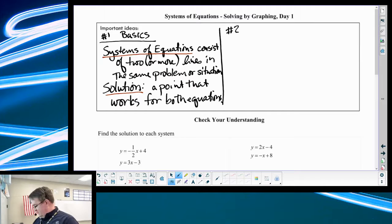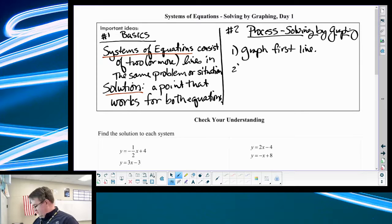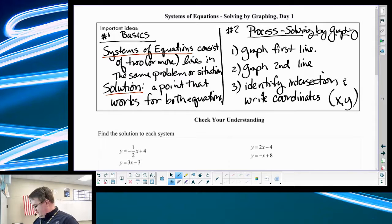Over here, number two, is going to be the process of solving by graphing. So what we're going to do here is first step, these are going to shock you. Think about what we did. What was the first thing we did? Graph the first line. Step two, I know this is going to be another shock, graph the second line. And then three, last part is identify the intersection.